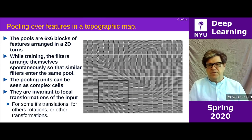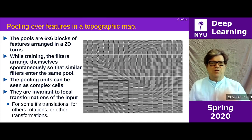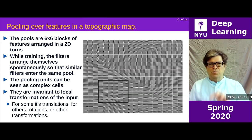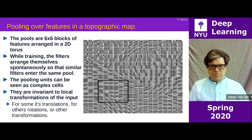I could have chosen any topology — 1D, 2D, 3D, or even some graph neighborhood — as long as the pooling is between neighbors in the graph. That will work.